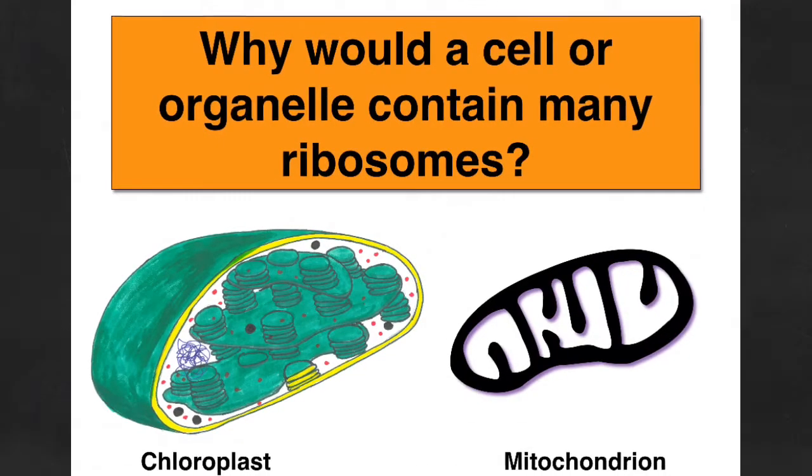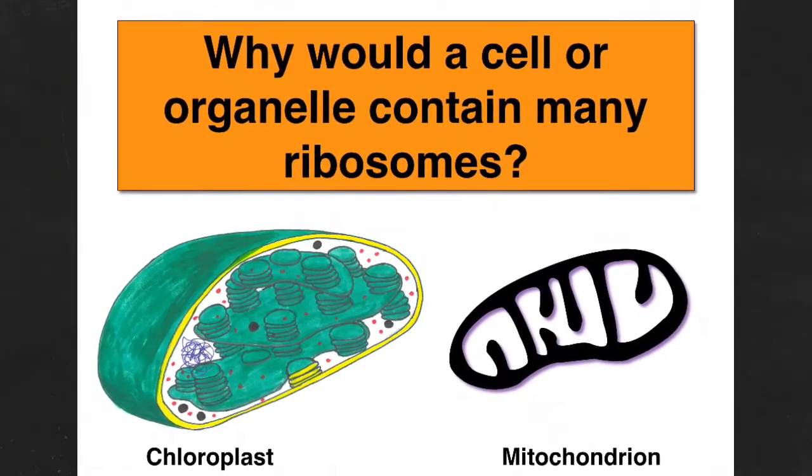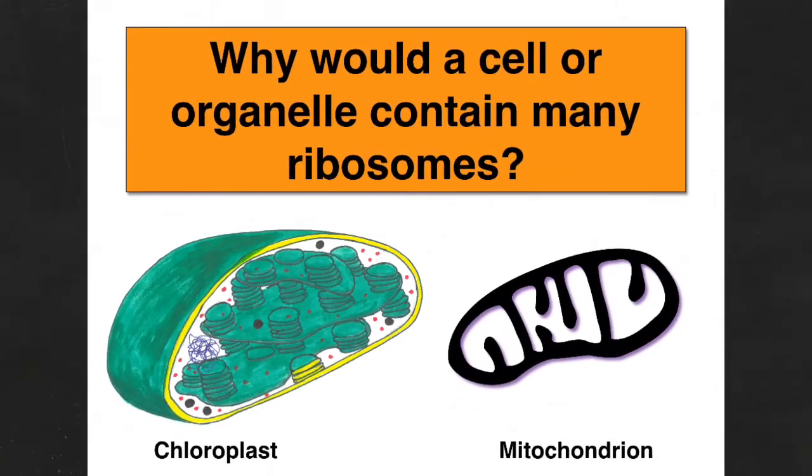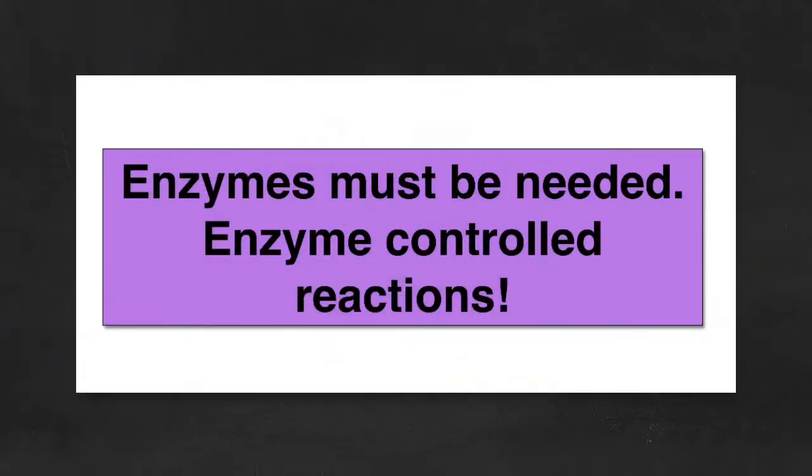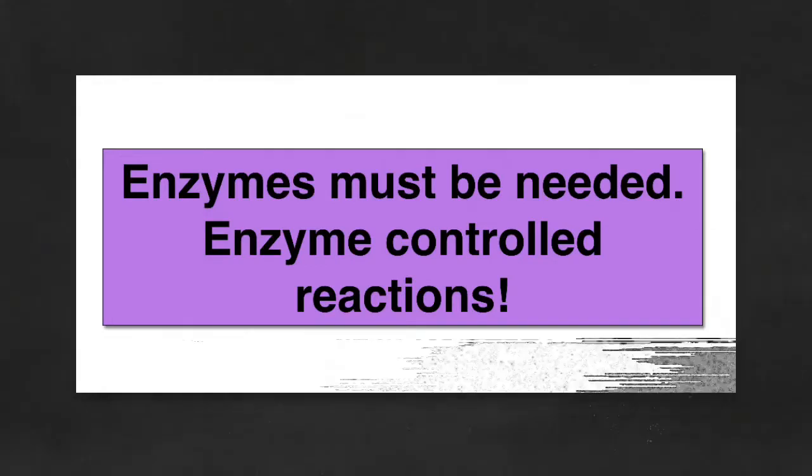Ribosomes are not only found in the cytoplasm of cells but also within particular types of organelles such as chloroplasts and mitochondria. But why? If ribosomes are present within these organelles, well then enzymes must be needed. There must be many enzyme controlled reactions taking place within these organelles.